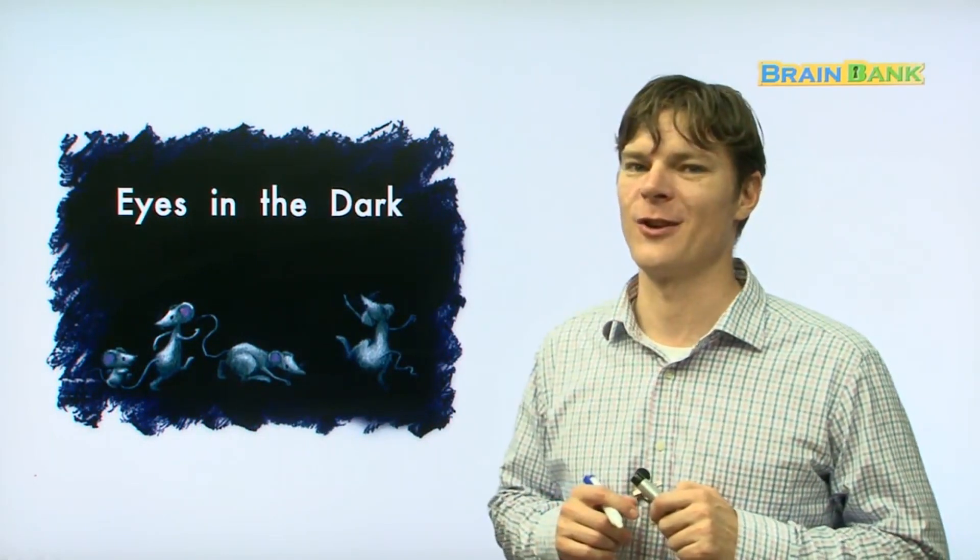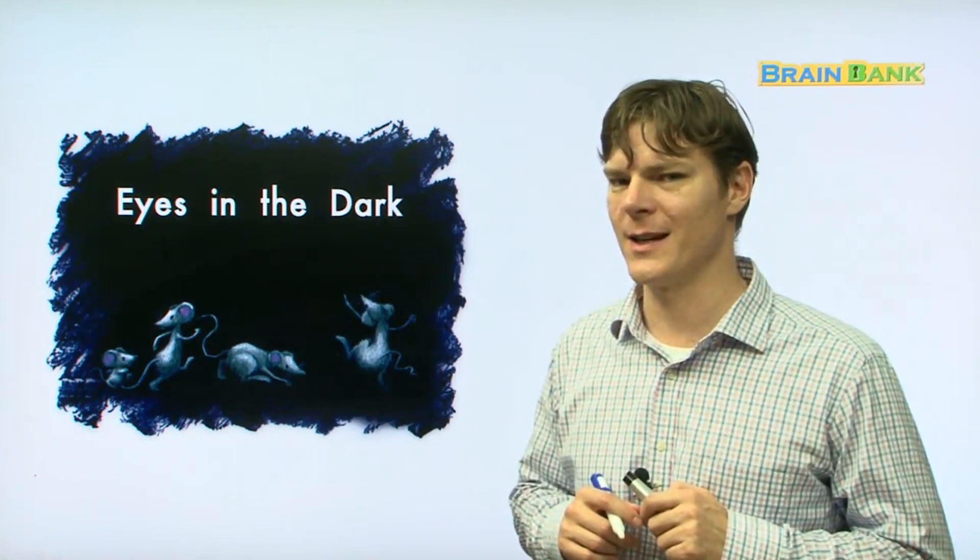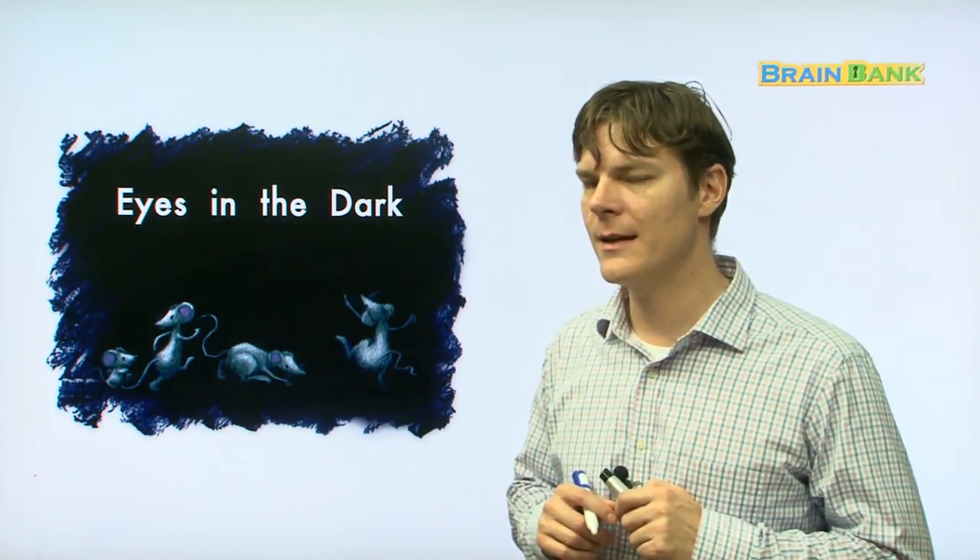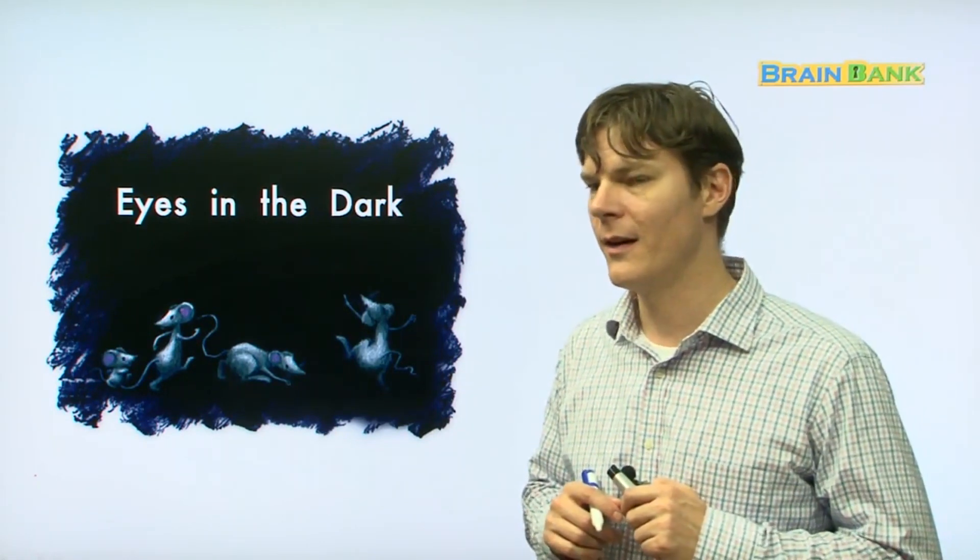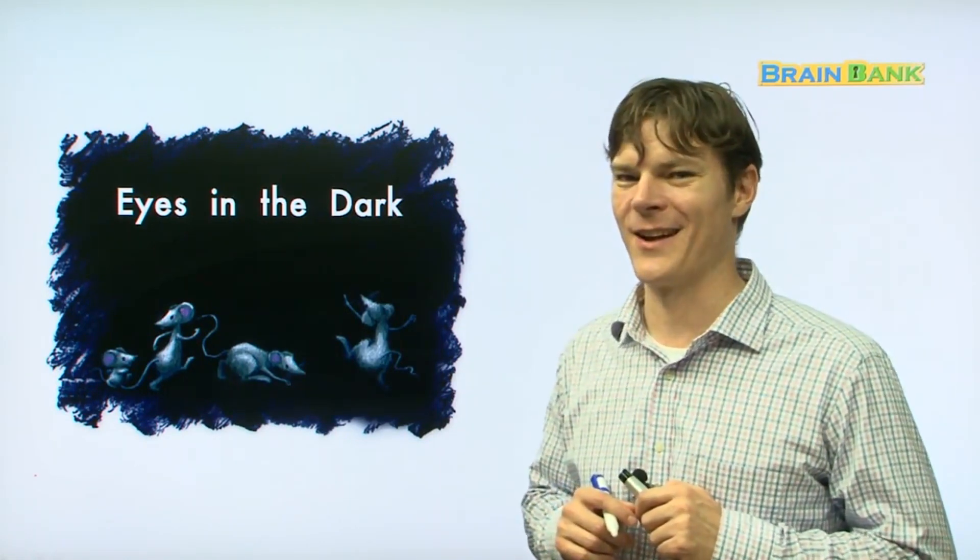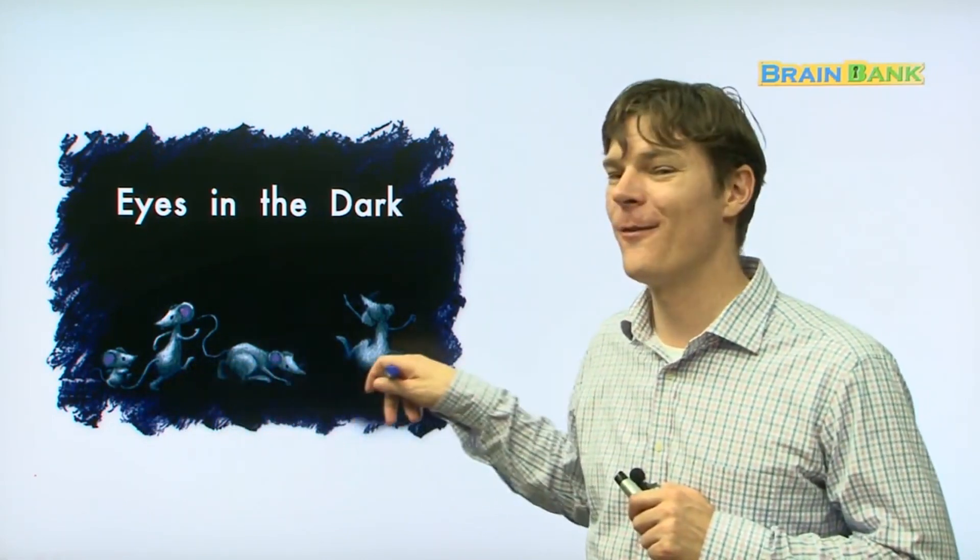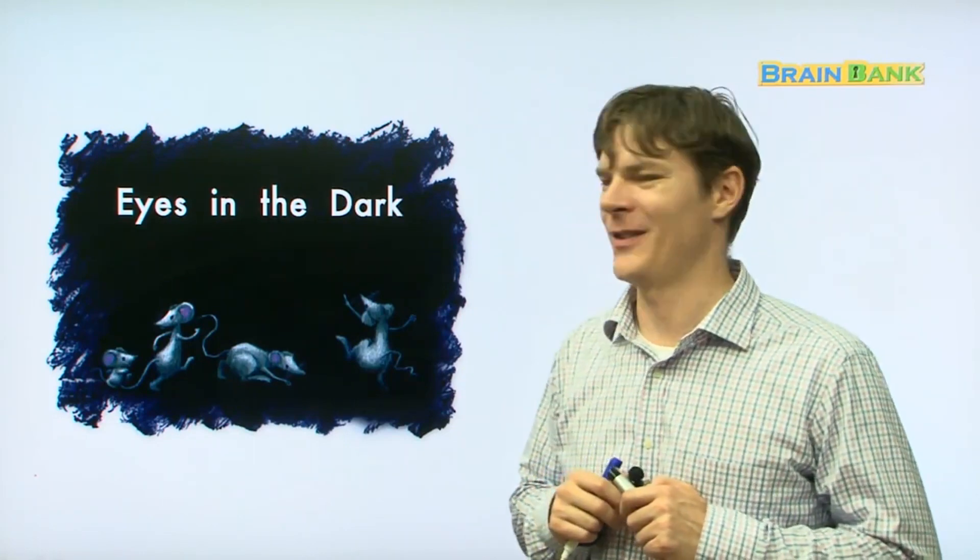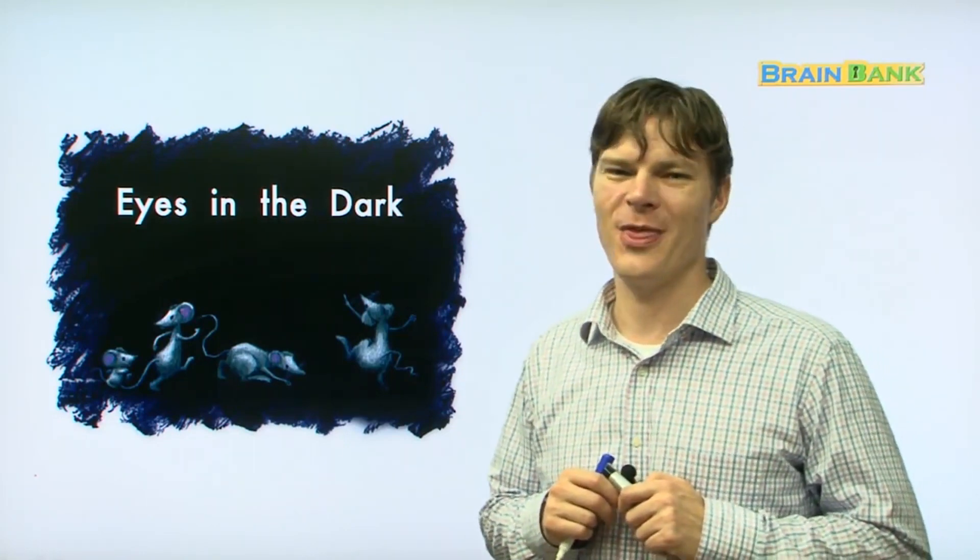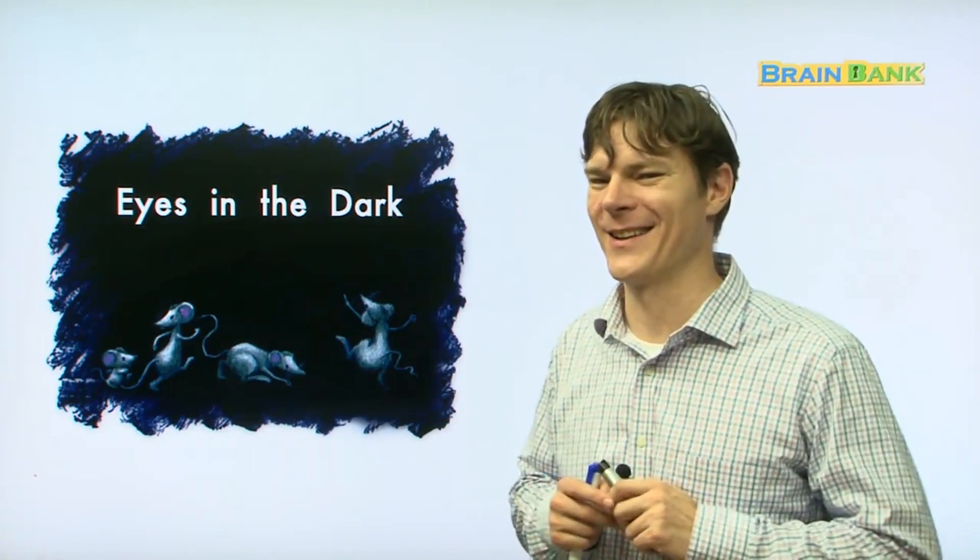Eyes in the Dark. Now, look at this page. Tell me, what do you see? Do you see any animals? Any small animals? That's right, there's some mice. There's one, two, three, four mice. Alright, so let's see what they're going to do, what's going to happen. Ready? Here we go.